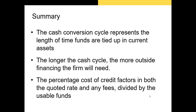Let's summarize what we covered. The cash cycle represents the length of time funds are tied up in current assets; we can also calculate the operating cycle. The longer the cash cycle, the more outside financing the firm will need. There are many ways to raise short-term financing, each with pros and cons. The percentage cost of credit factors in both the quoted rate and any fees charged to the borrower, divided by usable funds — the principal minus fees or interest paid to the lender. In the next lecture, I'll cover how to manage accounts receivable. If you have any questions, please don't hesitate to reach out via email or phone.